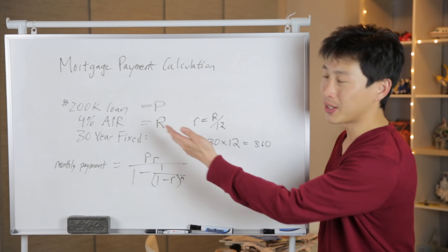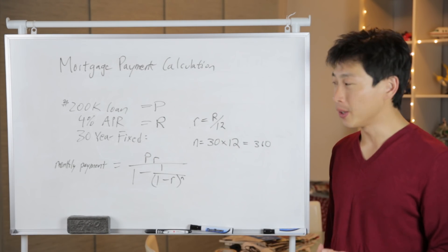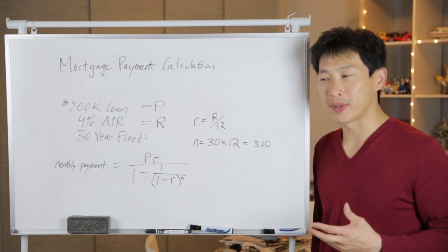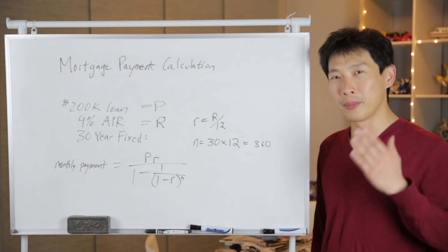For example let's say you have a $200,000 loan, you have a 4% APR, you have a 30-year fixed-rate loan. Now the interest on a mortgage payment actually does not compound every single day nor continuously. It compounds every single month.